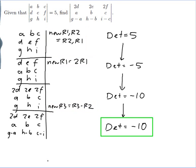So I should write down my final answer. So the determinant of 2D, 2E, 2F, A, B, C, G minus A, H minus B, I minus C is equal to minus 10.